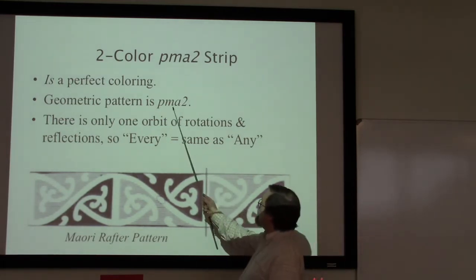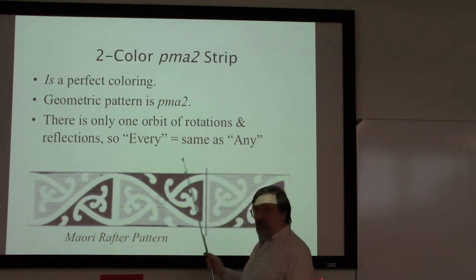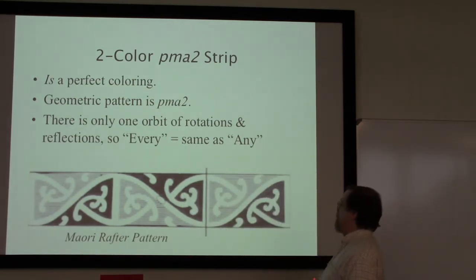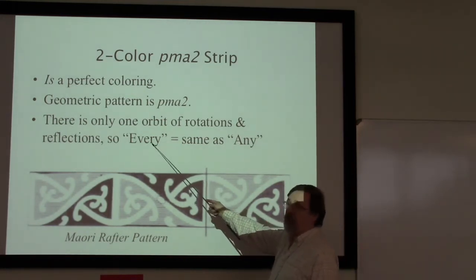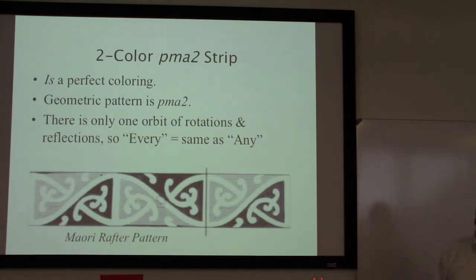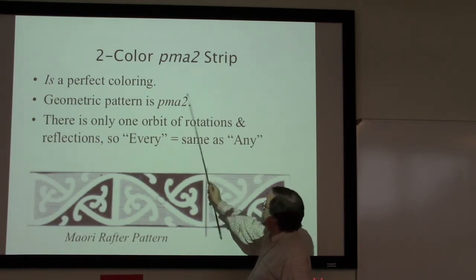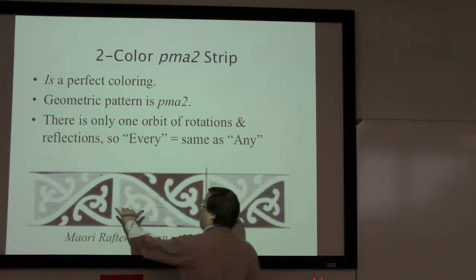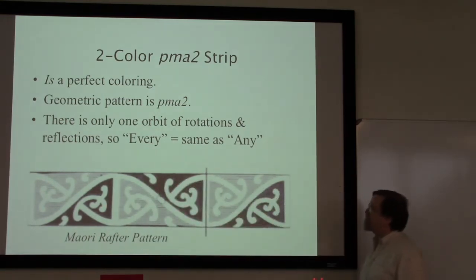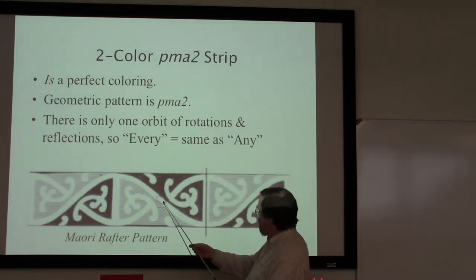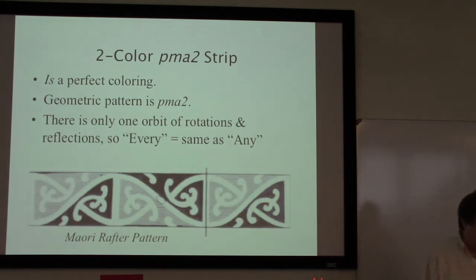The pattern is pma2. In pma2 there is only one vertical reflection and only one rotation point — unlike the usual case where m stands for two different vertical reflections and two stands for two different rotations. This vertical reflection reverses colors, so our m gets a prime. The glide reflection: black by my little finger, gray at my thumb — and after the glide reflect, black is still by my little finger and gray at my thumb — so the color is preserved, no prime for the a. This rotation point: black rotates to gray, this gray rotates over to that black — so we get a prime on that two as well.